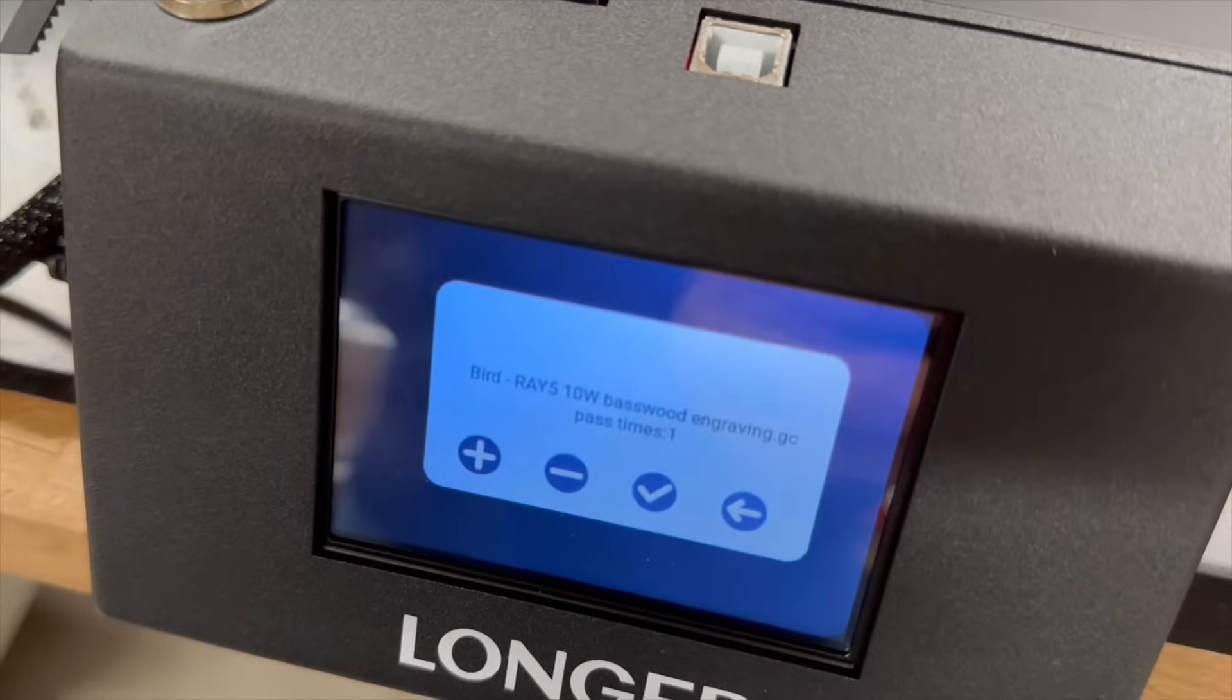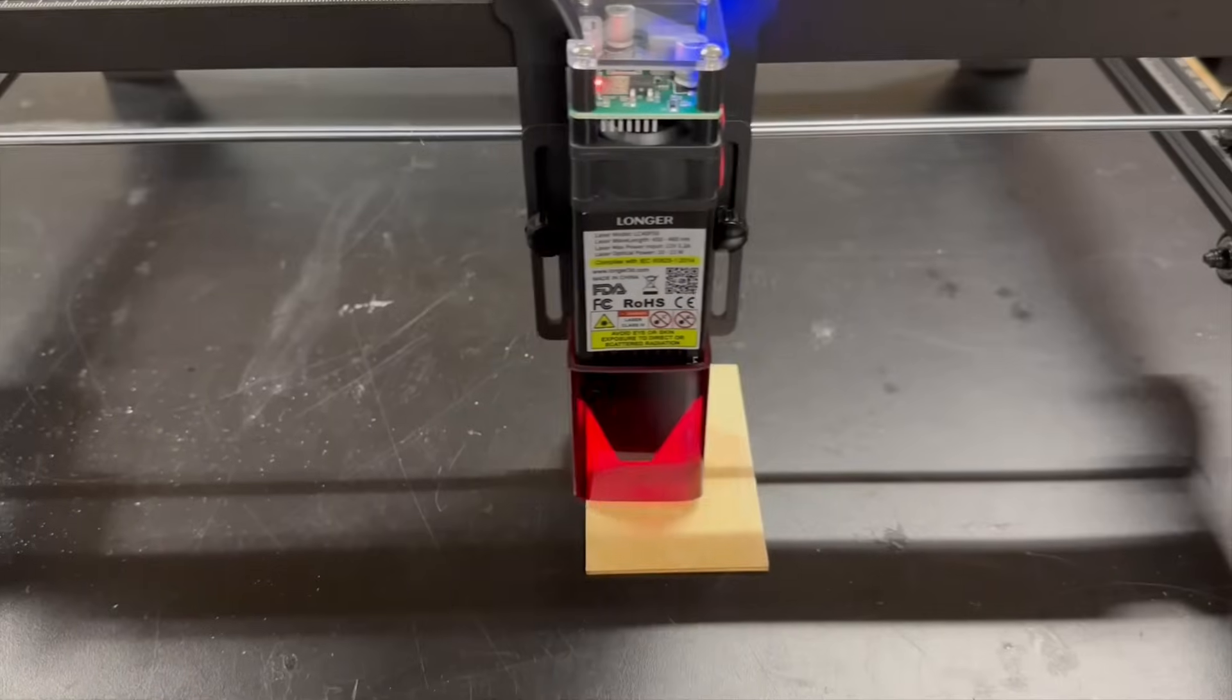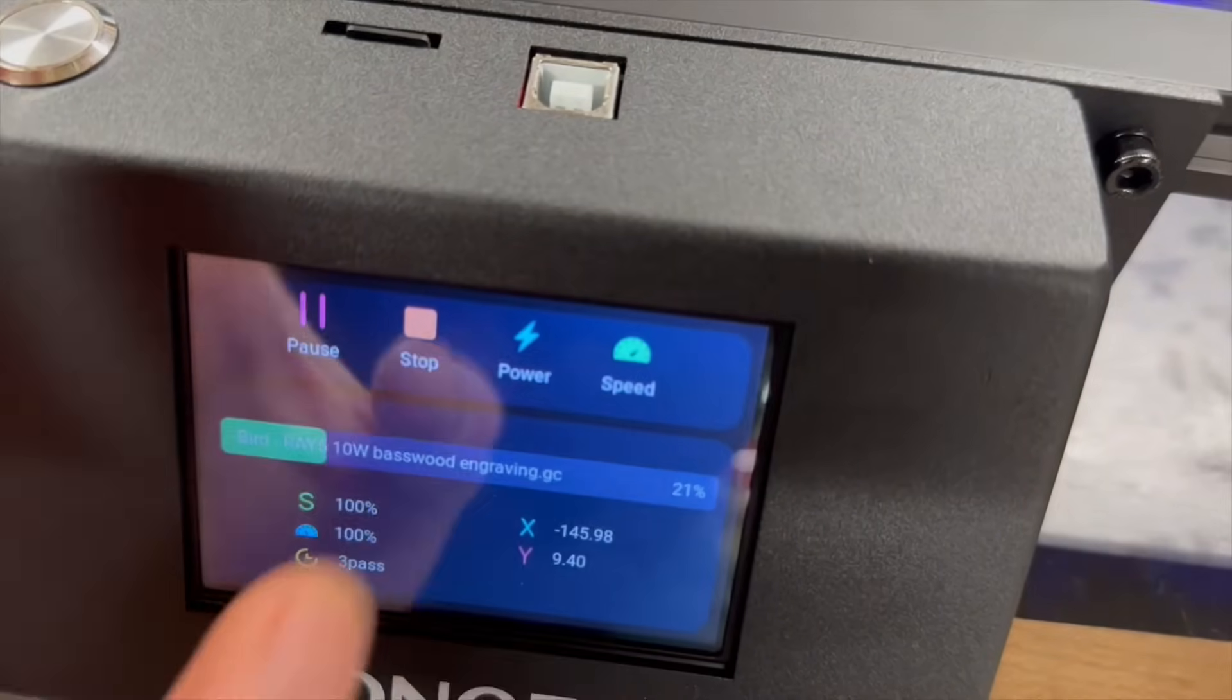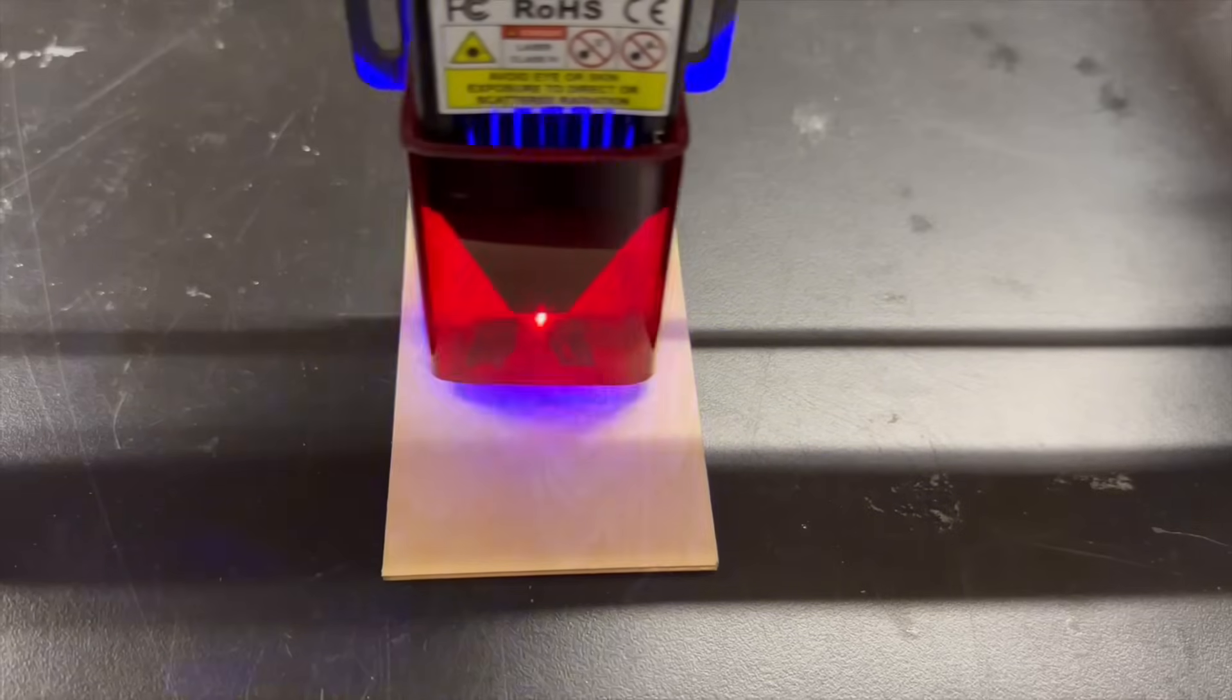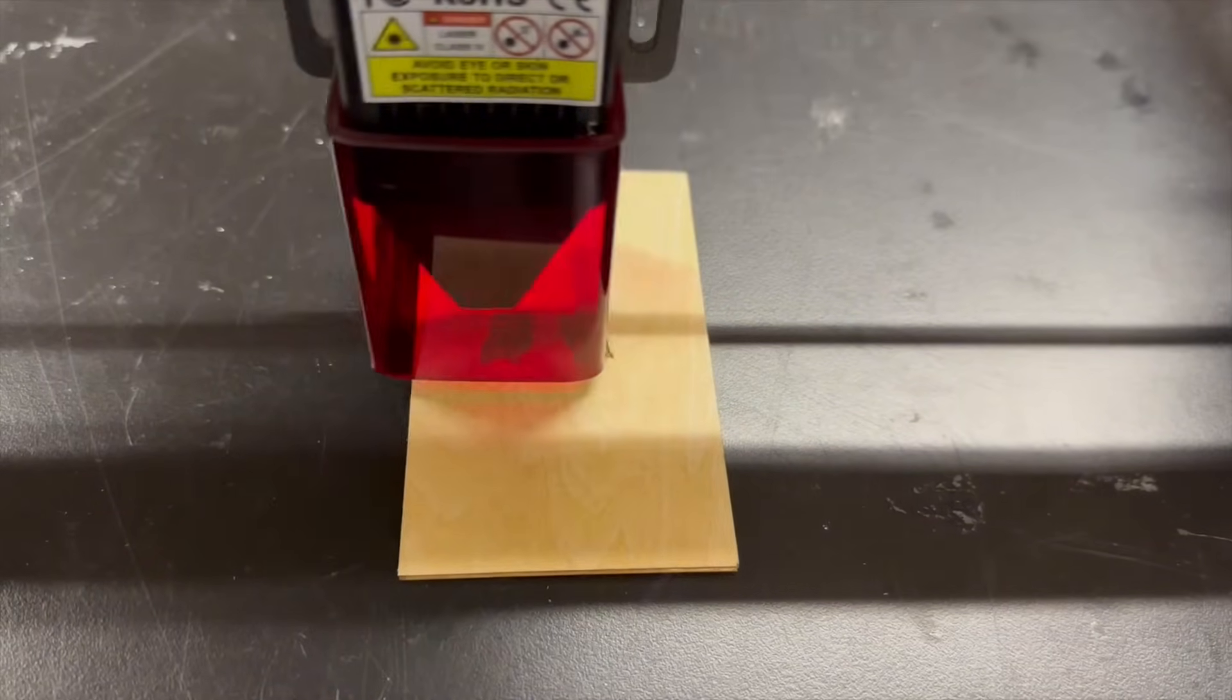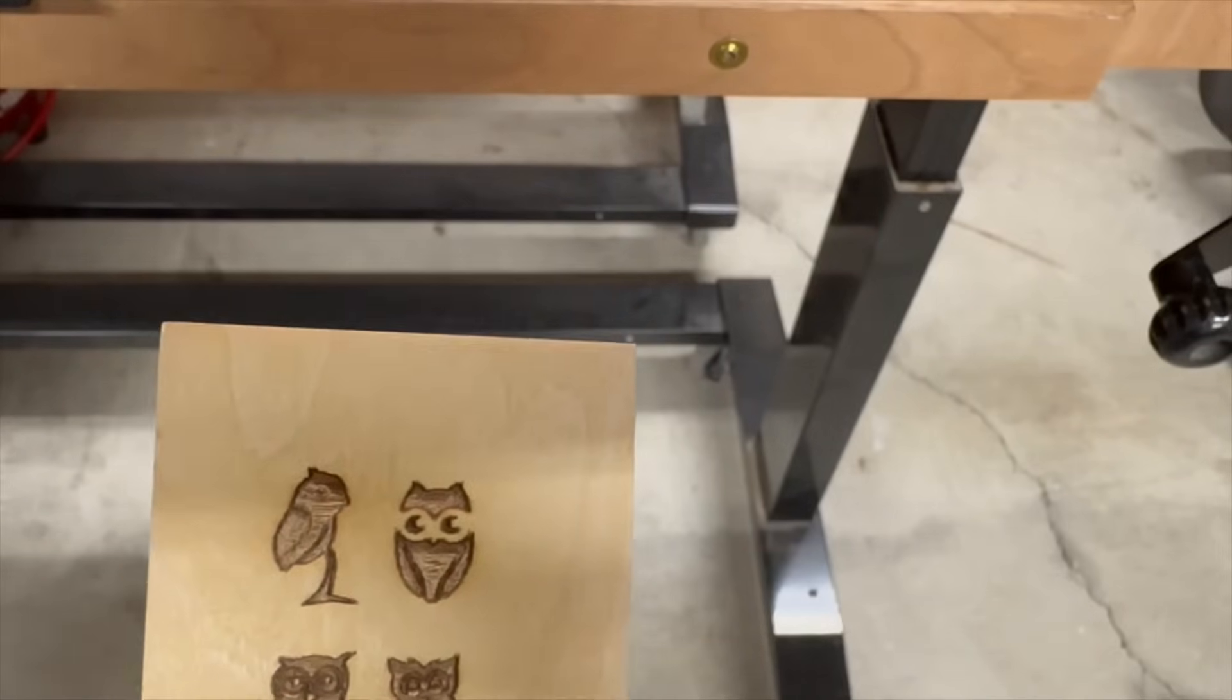Before I connected my laptop I decided to try out the test pattern cuts that are saved on the micro SD card. When operating it off the SD card you can make changes to the settings through the control unit. The test engraving looked pretty good so I decided to move on and connect my laptop.